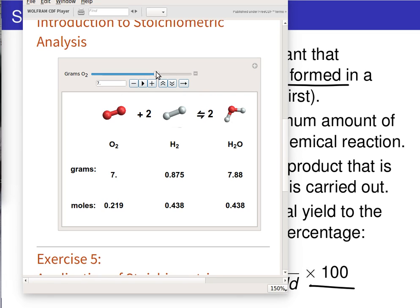So, for example, if we set the initial number of grams of oxygen at 8.5, we see that in order to fully react 8.5 grams of oxygen, we will need to react 1.06 grams of H2, and we will form 9.57 grams of H2O.